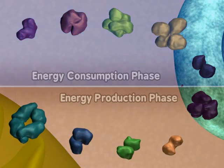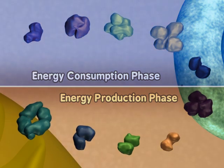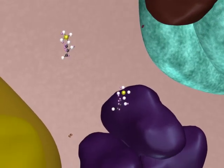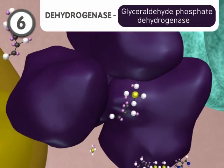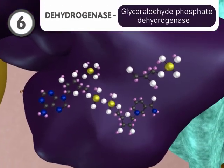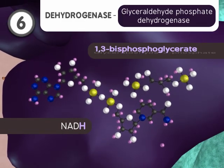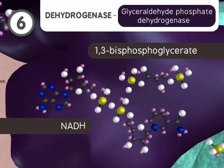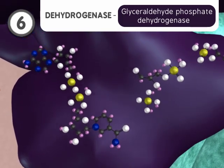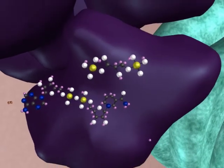The next five steps of glycolysis are the energy-producing phase. In step 6, both glyceraldehyde-3-phosphates are oxidized to 1,3-bisphosphoglycerate by a dehydrogenase. This step produces 1 NADH for each oxidized glyceraldehyde-3-phosphate, for a total of 2 NADHs. These NADHs are later used to produce more ATP for the cell.